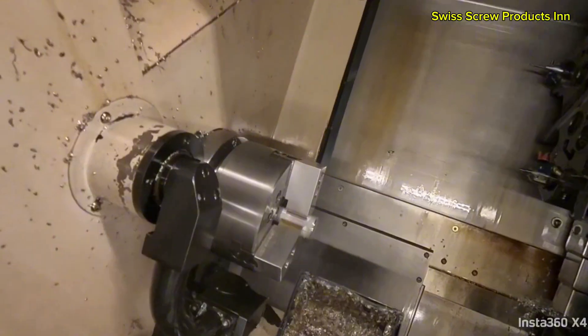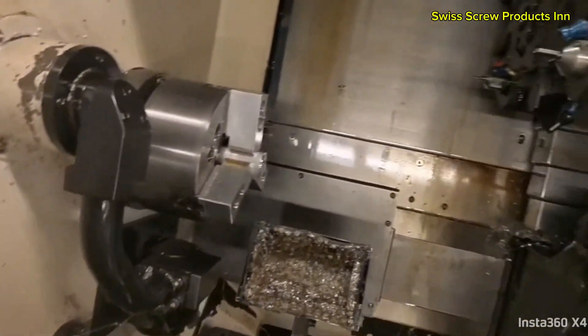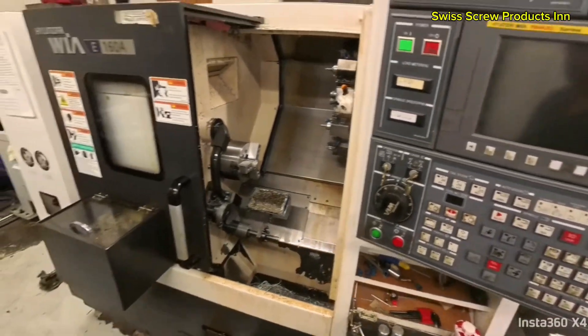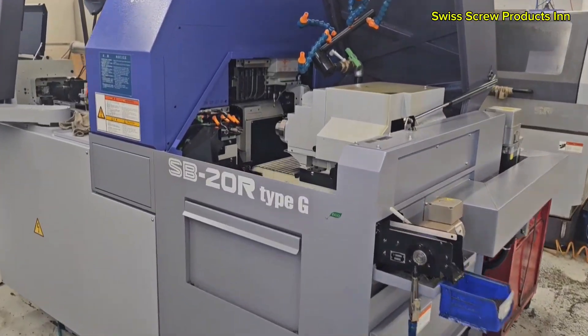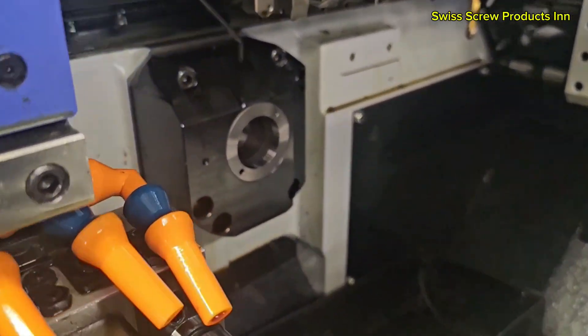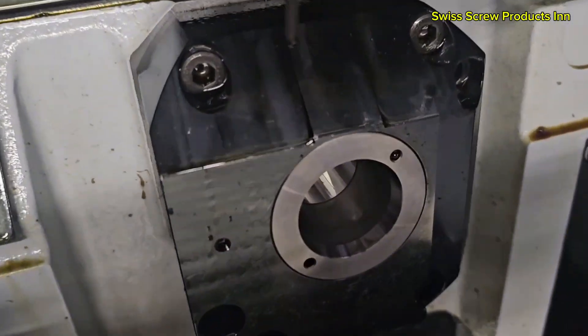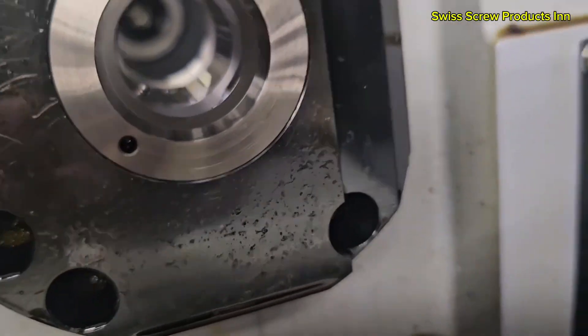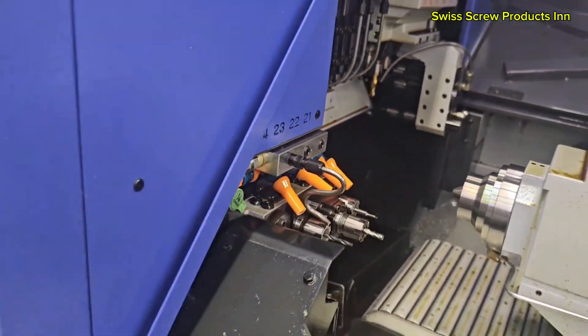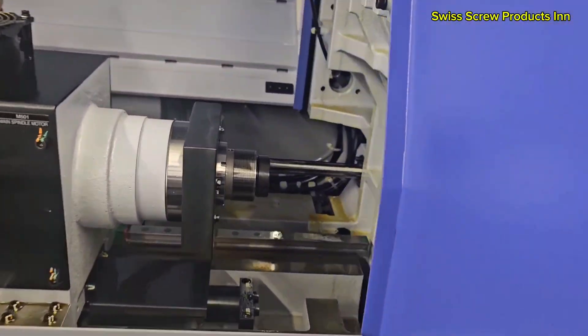What makes it different from a conventional lathe is the way the material moves. In a traditional CNC lathe, the material is held in a chuck and spins while stationary cutting tools move into position to shape it. But in a Swiss machine, it's the opposite. The material is held by a sliding headstock, which moves the part in and out of the machine through a guide bushing near the cutting area.